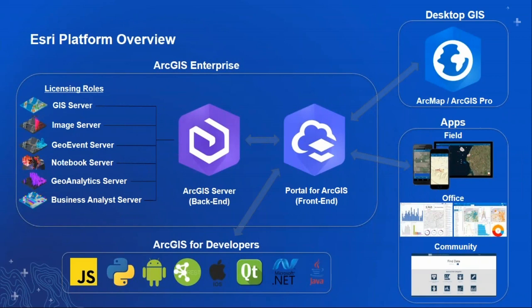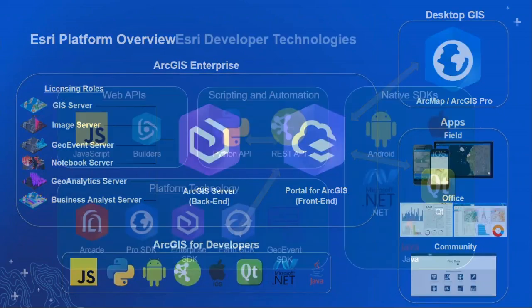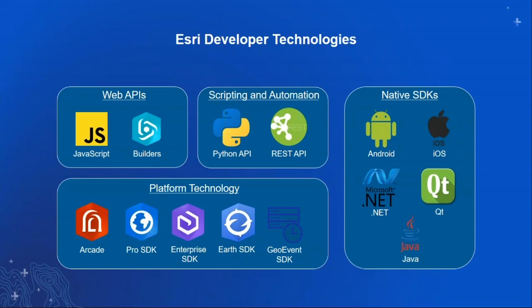This slide depicts the overall Esri platform and shows how everything works together seamlessly. Even though today we're focusing on developing solutions specifically for Pro, the solutions you create can easily leverage the other components of the platform. For example, you can write a tool using the Pro SDK that manipulates the display of a map living within an app you created with the JavaScript API. The developer SDKs and APIs can be broken down into four main categories, and the Pro SDK falls under the platform technologies.